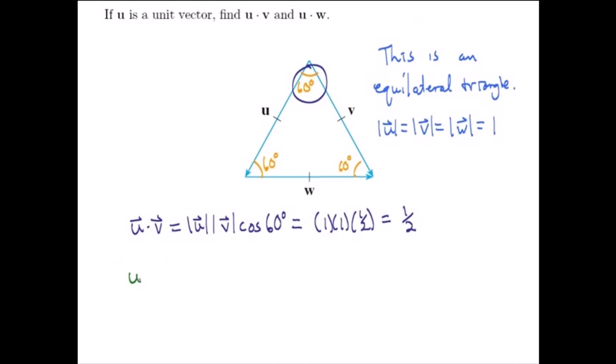How about u·w? u·w is the magnitude of u times the magnitude of w times the cosine of the angle between them. That's the angle formed between the two vectors if we start them at the same point. What's that angle going to be? If I slide w up so it starts at the same point as u, it would come out like so.